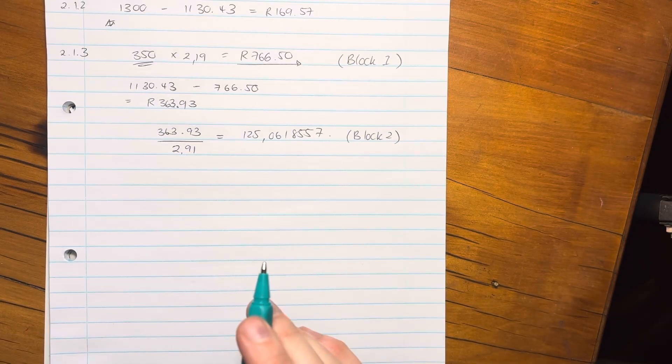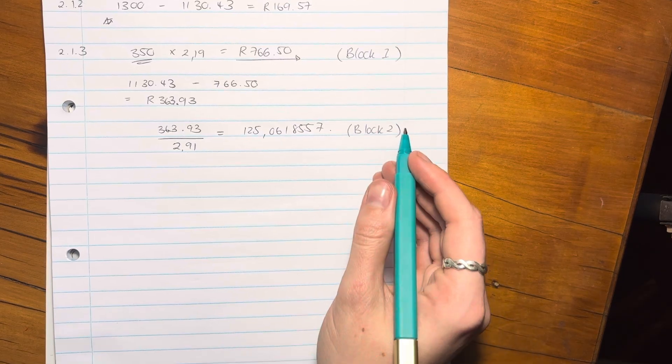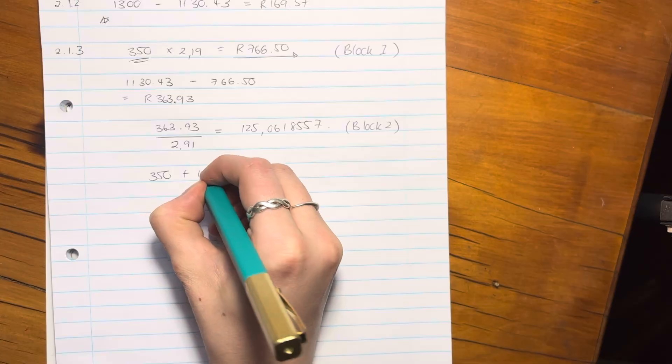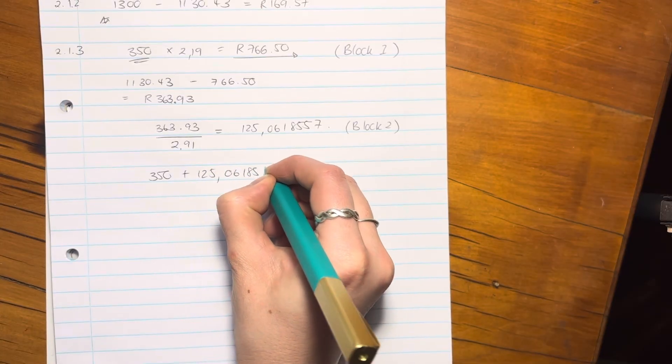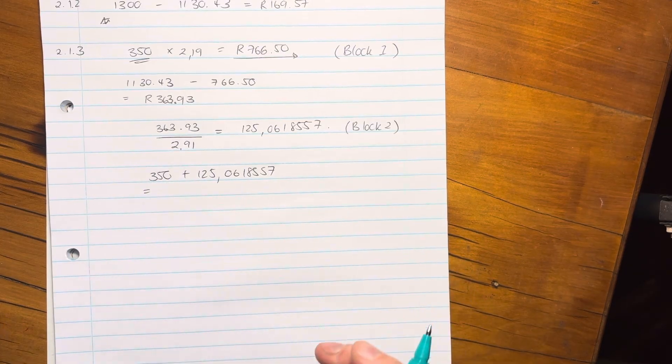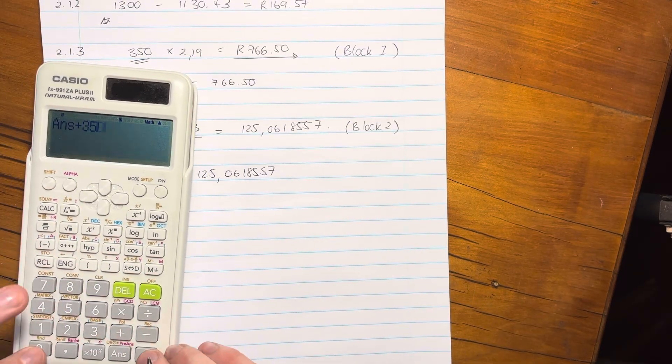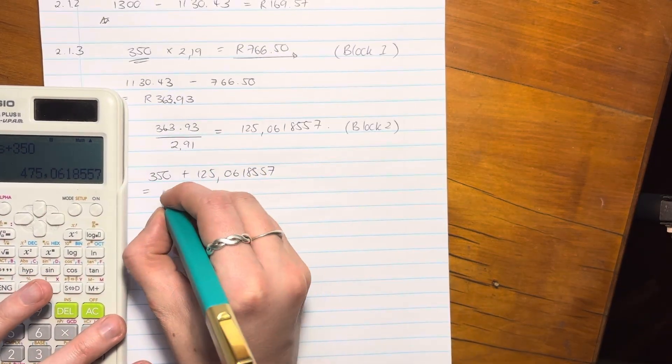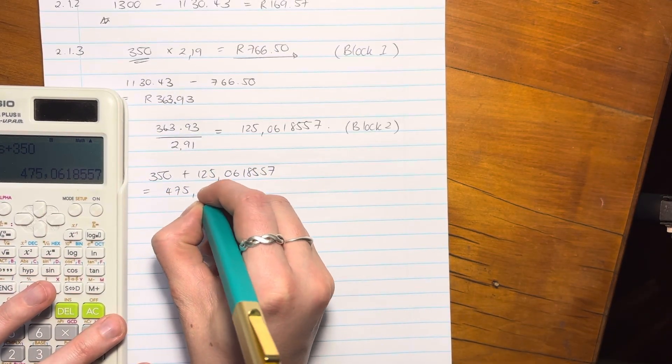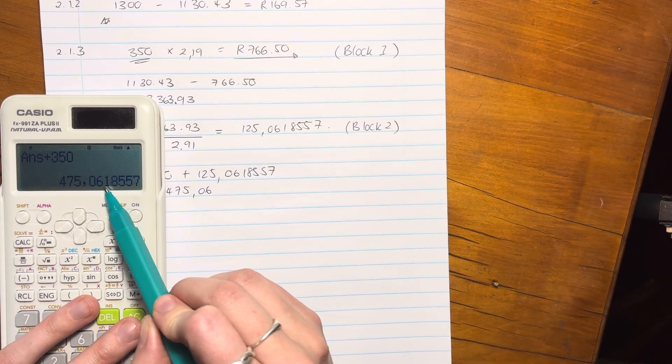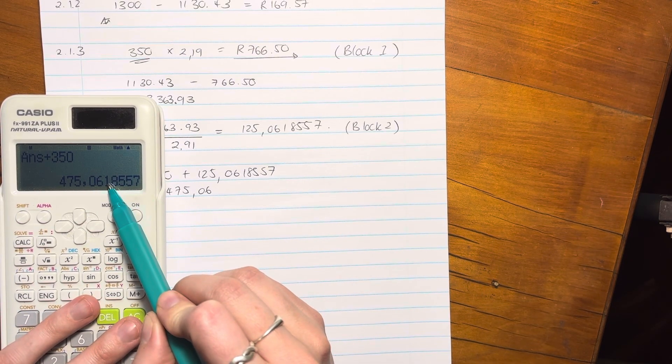How much did she use in block 1? Well, she used 350 in block 1. We already ascertained that. So now to get the total answer, you obviously have to add the two things together. So you have to say, she used 350, right, in block 1. And she used 125.0618557 in block 2. And you add those two together. And that's how much she used in total over this period, right? So she used 475.06.